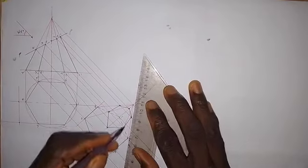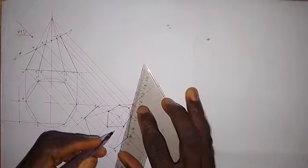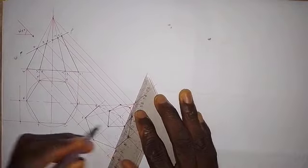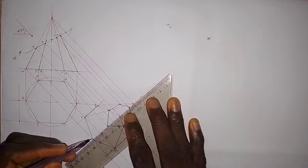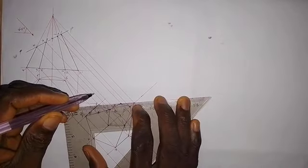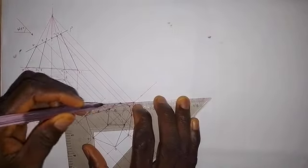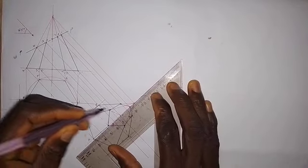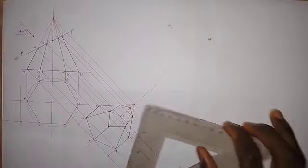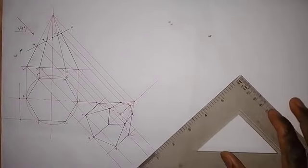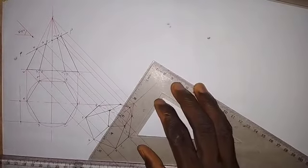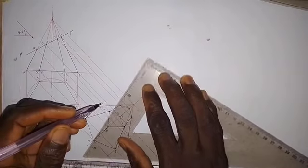We make the visible outline a thick line. This line is thick, this line also thick. The line from point 1 upward — which we cannot see — is made a short dashed line. We then need to hatch the cut surface using a 60-degree set square.